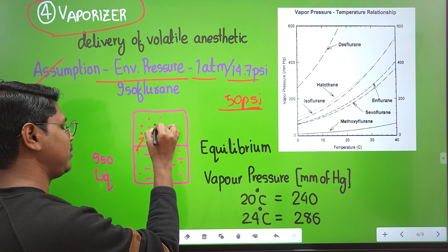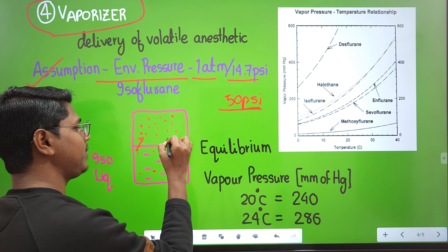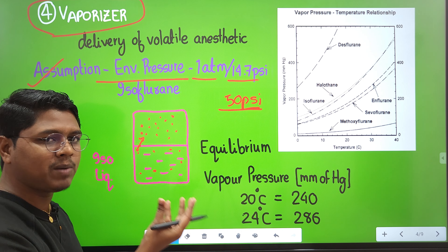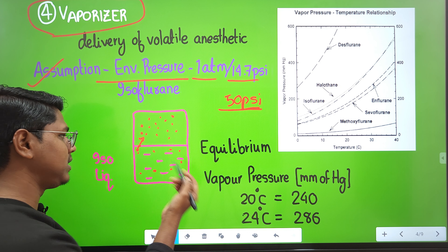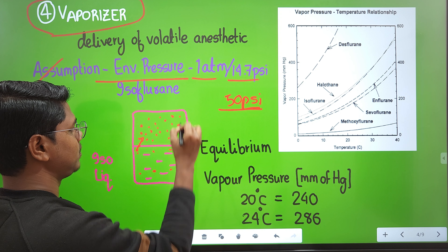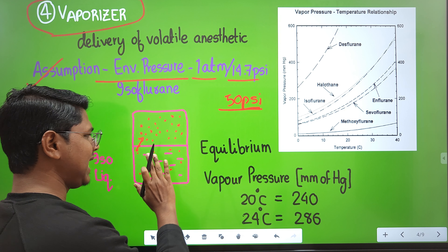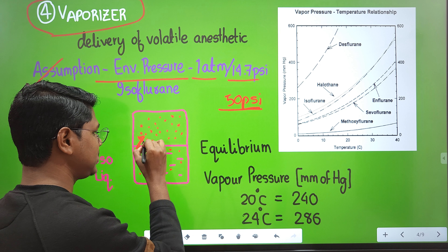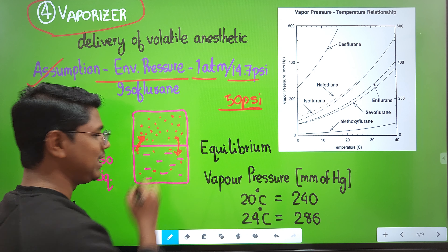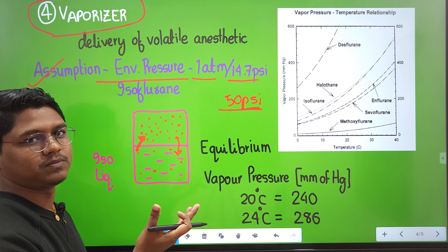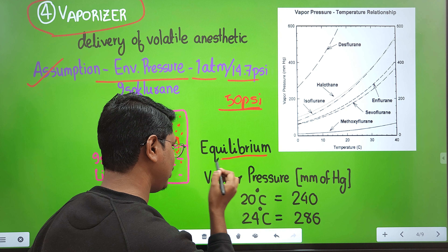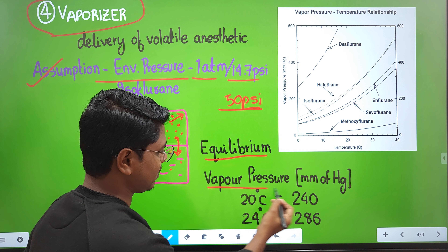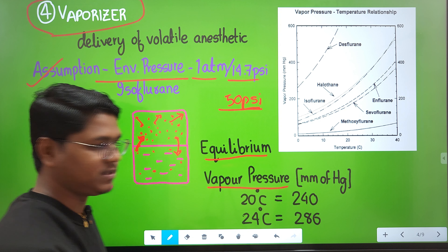Eventually equilibrium is reached: the number of molecules entering the vapor phase equals the number returning to the liquid phase — net transfer is zero. The pressure exerted by the vapors at this equilibrium is known as vapor pressure, usually expressed in mmHg.